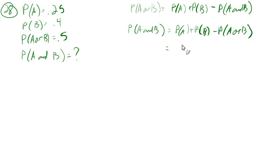So the probability of A and B equals the probability of A, which is 0.25, plus 0.4, that's B, minus 0.5. So 0.25 plus 0.4 is 0.65, minus 0.5 is 0.15. So this is 0.15.